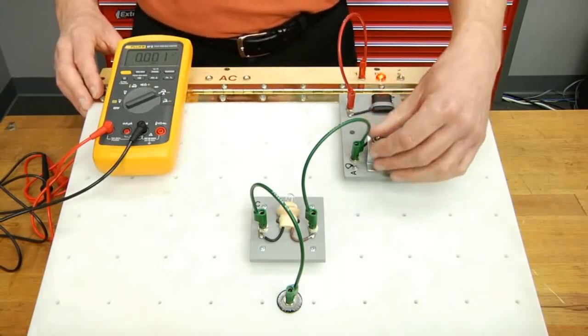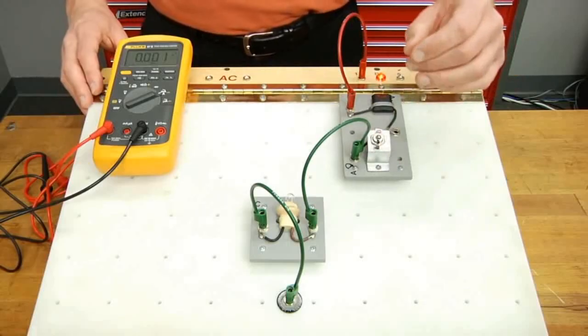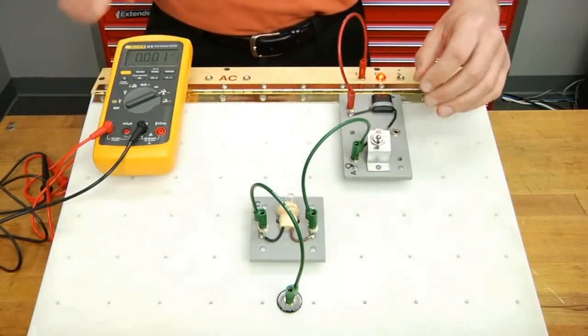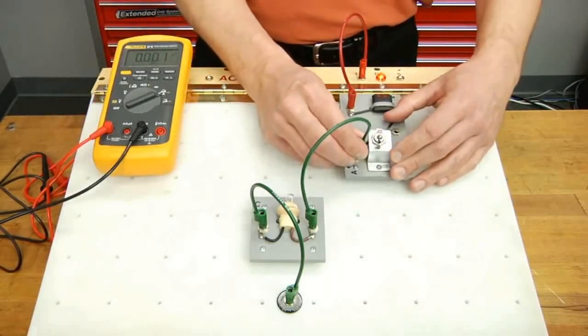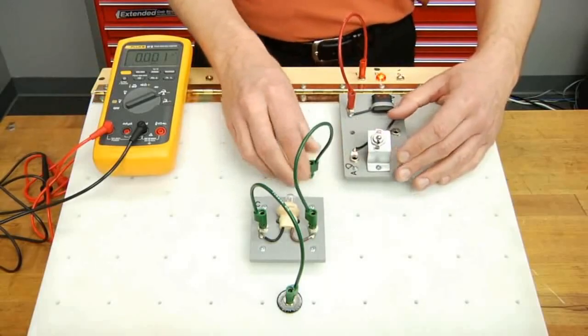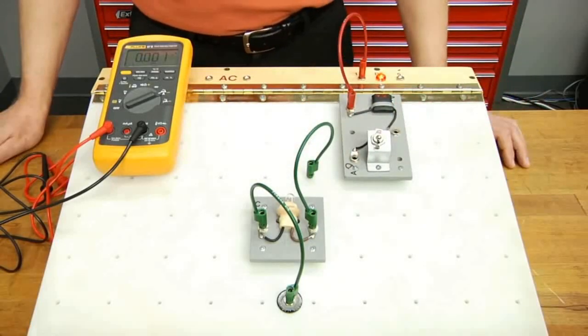To do that, we start off by powering down our circuit, which we already are. We next need to create an open within our circuit. I'll do that by disconnecting it here. Remember, amperage is the same throughout the entire circuit, so it doesn't matter where you disconnect the circuit, your reading will be the same throughout.